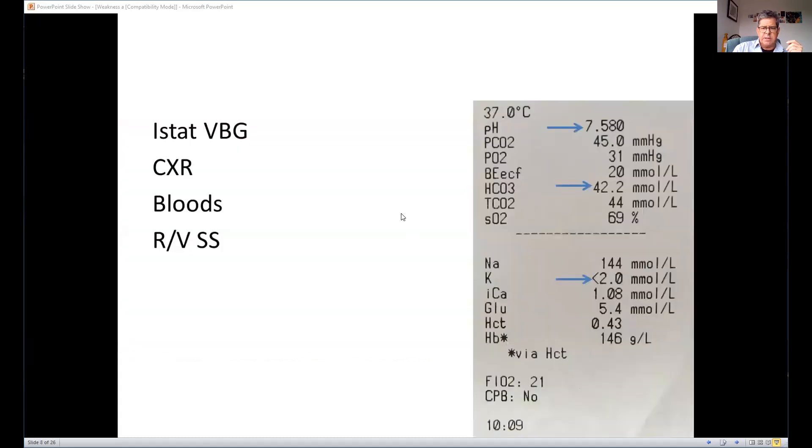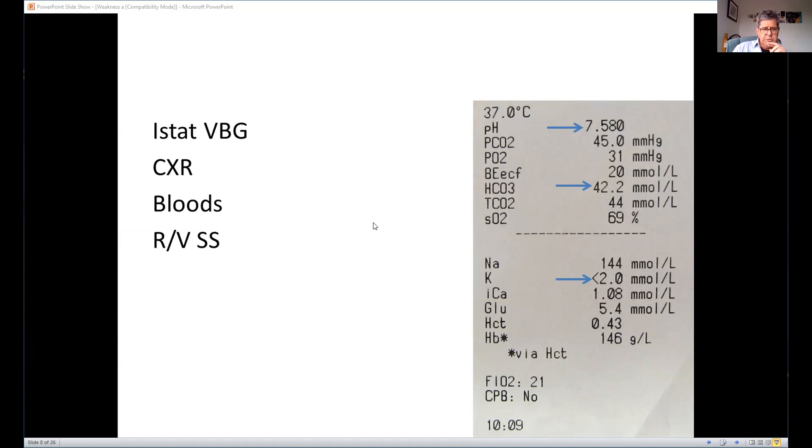So they've done a venous blood gas and that did in fact show significant hypokalemia and a metabolic alkalosis. That is, there's a quite significant alkalosis and it's not a respiratory cause. They're not hyperventilating. They're holding back bicarbonate. So it's a metabolic cause and quite a lot of bicarbonate. So they did that, organized a few other bloods, and were looking to get a senior to look at them.